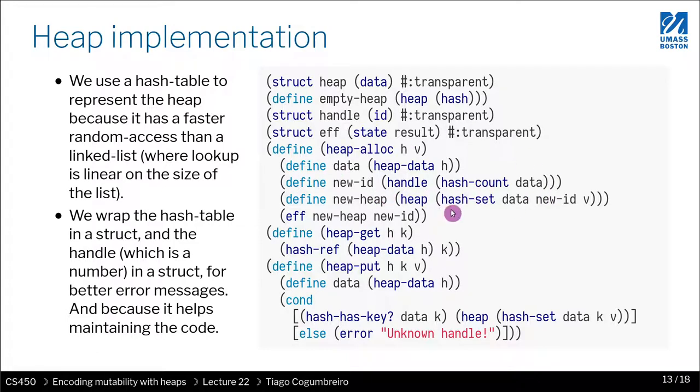And in the next line, what we're doing is we're constructing the new heap. So what are we storing in the new heap? We're taking the old hash table that represented the old heap, and we're putting there the new ID. And assigning to the new ID, that's going to be the key. The value is going to be the value passed in parameter.